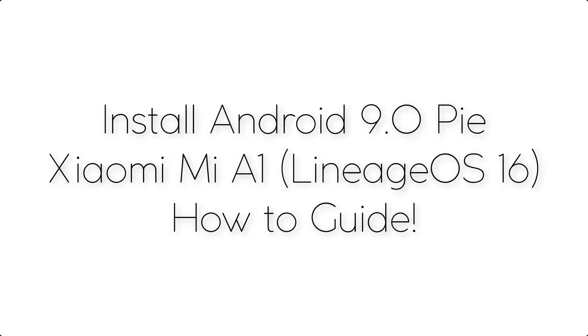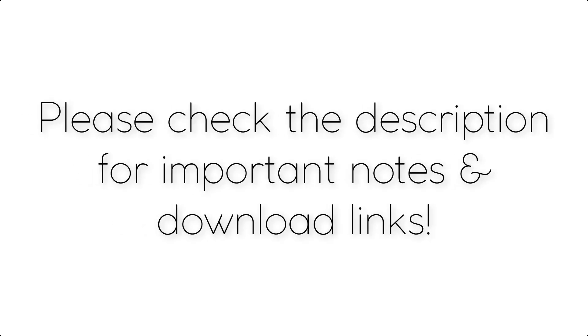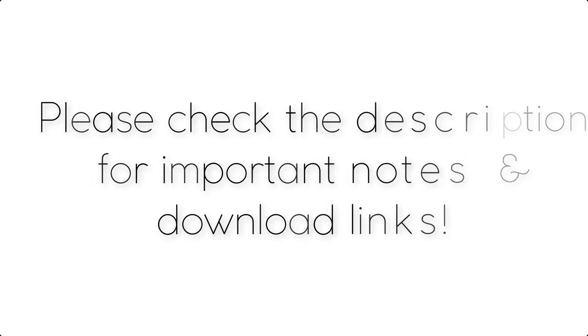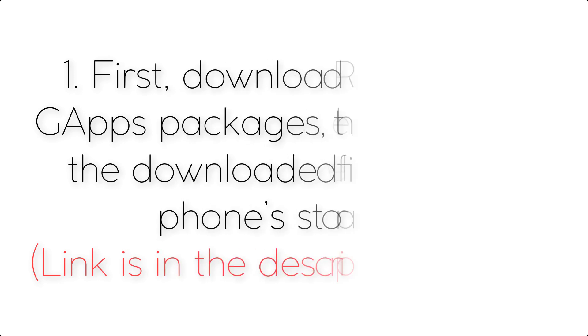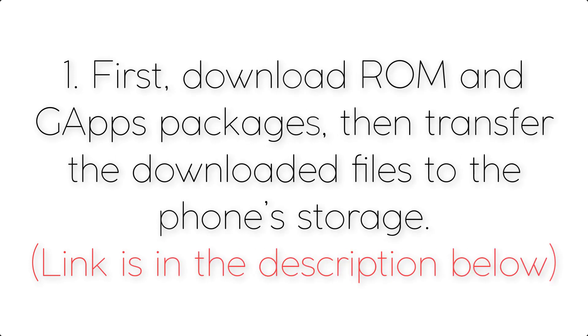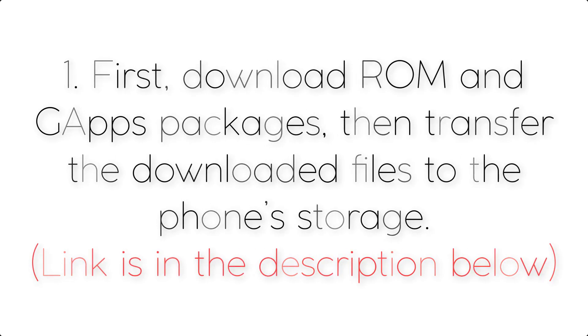Install Android 9.0 Pi on Xiaomi Mi A1 via Lineage OS 16. Please check the description for important notes and all the download links. First, download the ROM and GApps packages, then transfer the downloaded files to the phone storage. The link is in the description below.